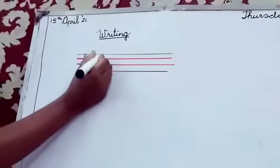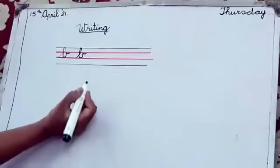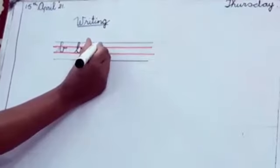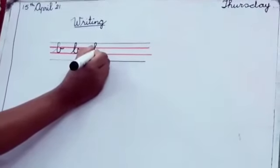Slant line, go up, make a loop, go down, come up. Get it? B. Do you understand class 3? How to make B?